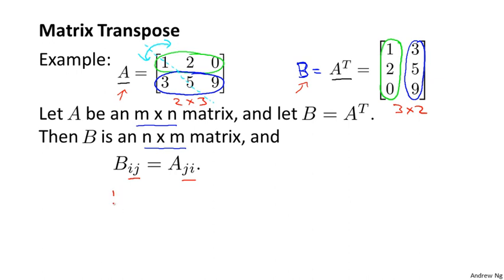So for example, B_12 is going to be equal to, look at this matrix B, B_12 is going to equal this element three, right? First row, second column. And that's equal to this, which is A_21, second row, first column, which is equal to three.